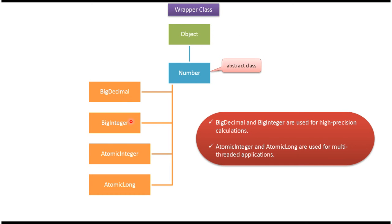BigDecimal, BigInteger, AtomicInteger, and AtomicLong — these are some more wrapper classes available in Java. These wrapper classes are subclasses of the abstract class Number, and Number is a subclass of Object class. BigDecimal and BigInteger are used for high precision calculation, while AtomicInteger and AtomicLong are used for multi-threaded applications.